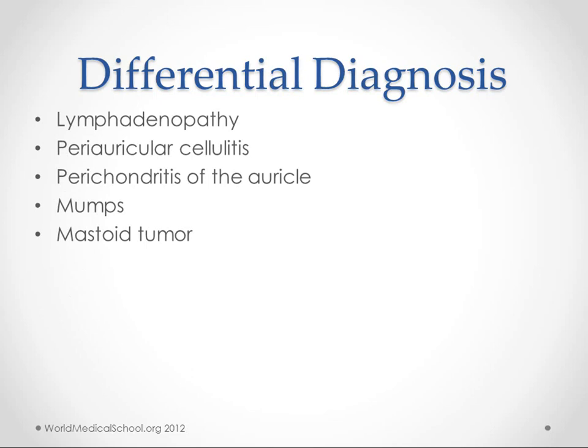In the differential diagnosis, this could be posterior auricular lymphadenopathy — if you see acute otitis media with bulging behind the ear, the bulging could be lymphadenopathy. Periauricular cellulitis can cause swelling and redness but will look more superficial. Perichondritis of the auricle involves inflammation of the auricular cartilage. Mumps can also present with swelling, but that swelling is more in front of the ear. Mastoid tumor can have a similar appearance but will typically be less painful and less symptomatic.